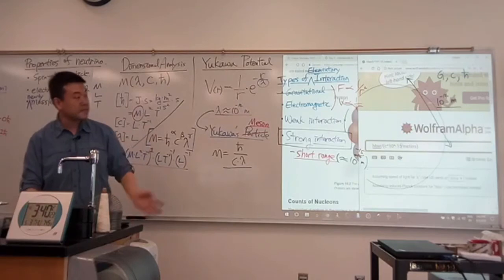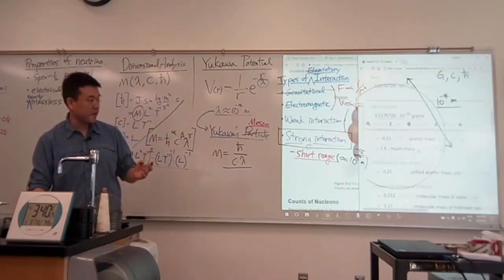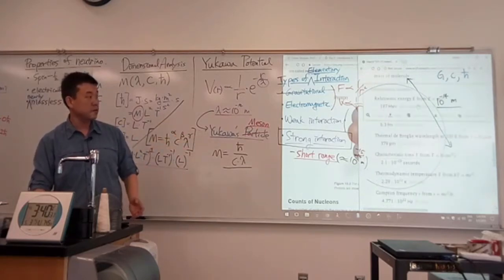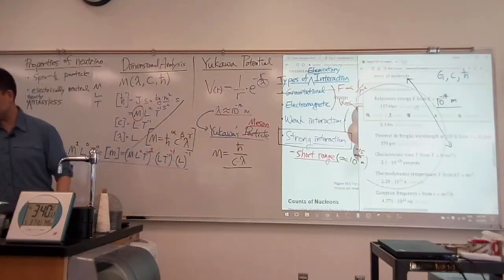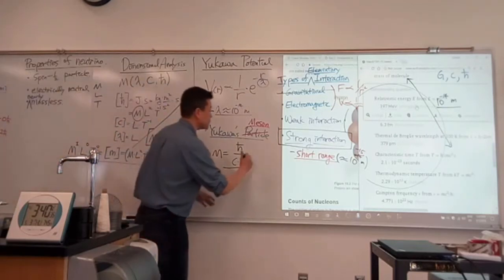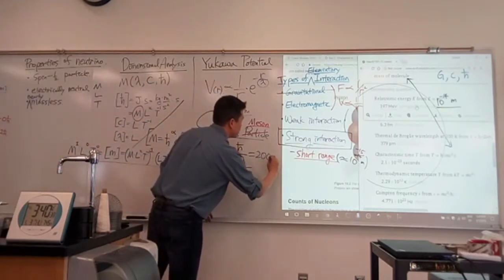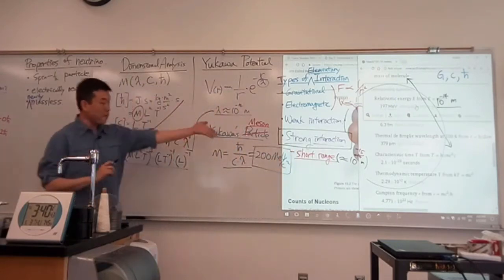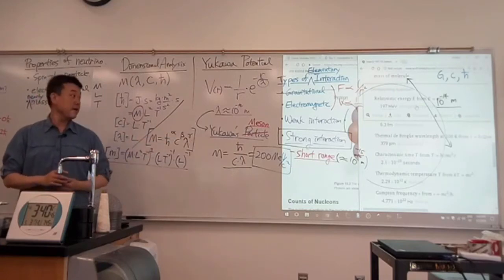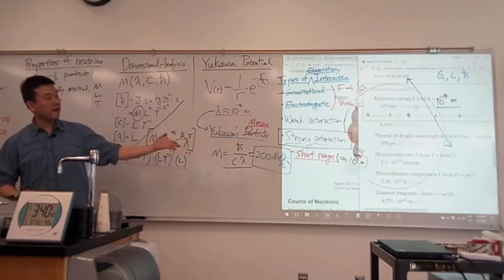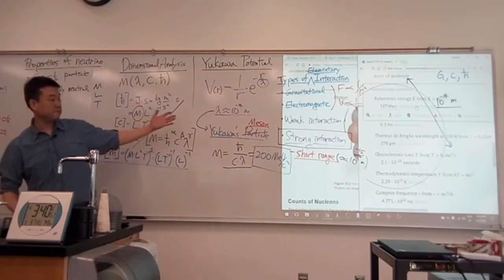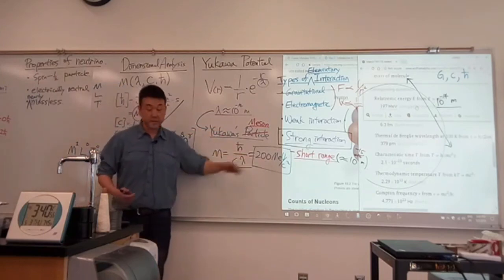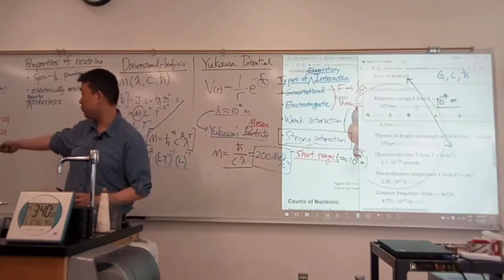So this was Yukawa's prediction that if you have a particle that's mediating this short-range force, then the mass of the particle, just a rough guess, is going to be 200 MeV per C squared. So that's one of the characteristics of Yukawa's meson, and it's a bona fide prediction because he's hypothesizing existence of a particle with a mass that doesn't match any of the known particles.